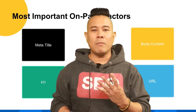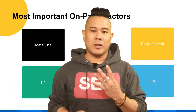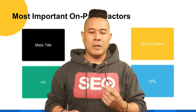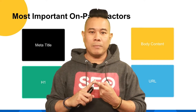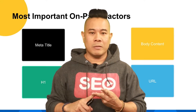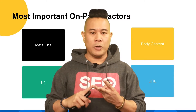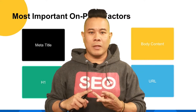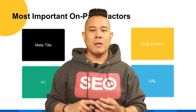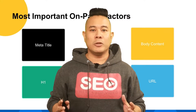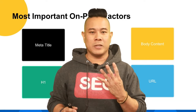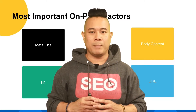There are four main factors in on-page SEO: the meta title, H1, the URL, and the body copy. Be sure to include your main keyword in these four places and you should be in good shape.